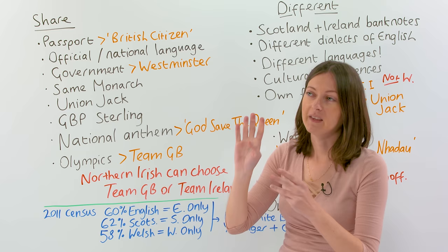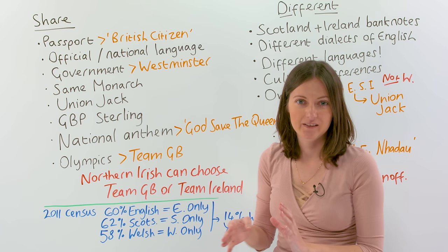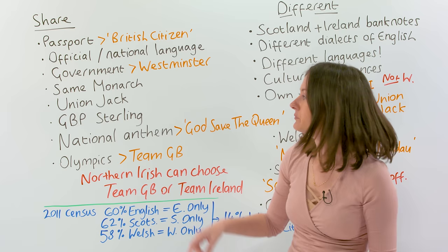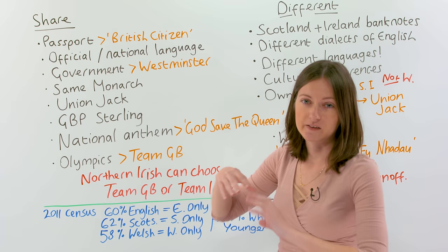There are some devolved governments in the countries of the UK — in Scotland, Wales, and Northern Ireland. So they can make some laws about some issues for themselves, but even though they have their own government, the government in Westminster, in London, is sovereign. So what they say has the most power over the other governments.